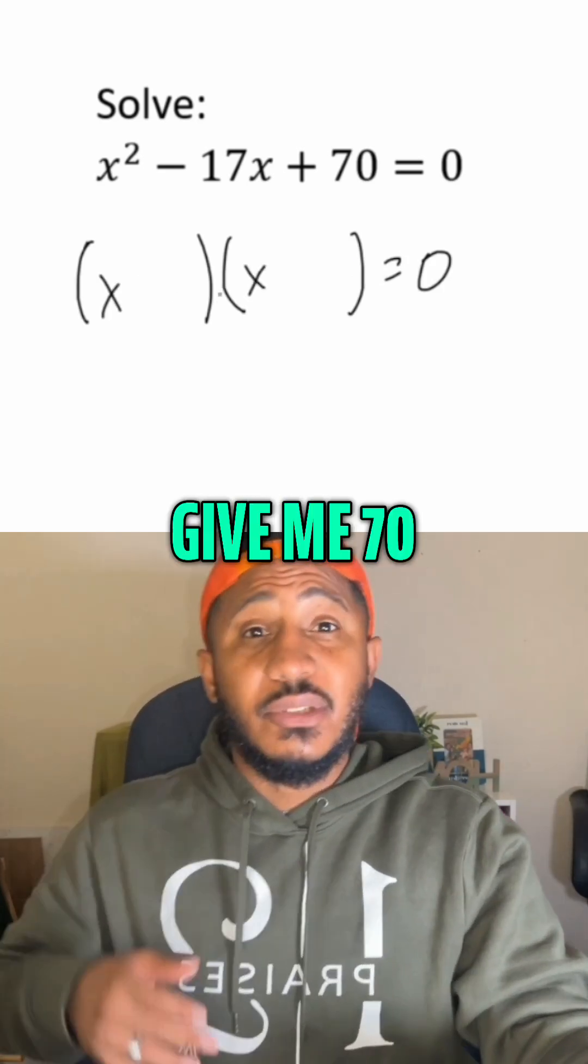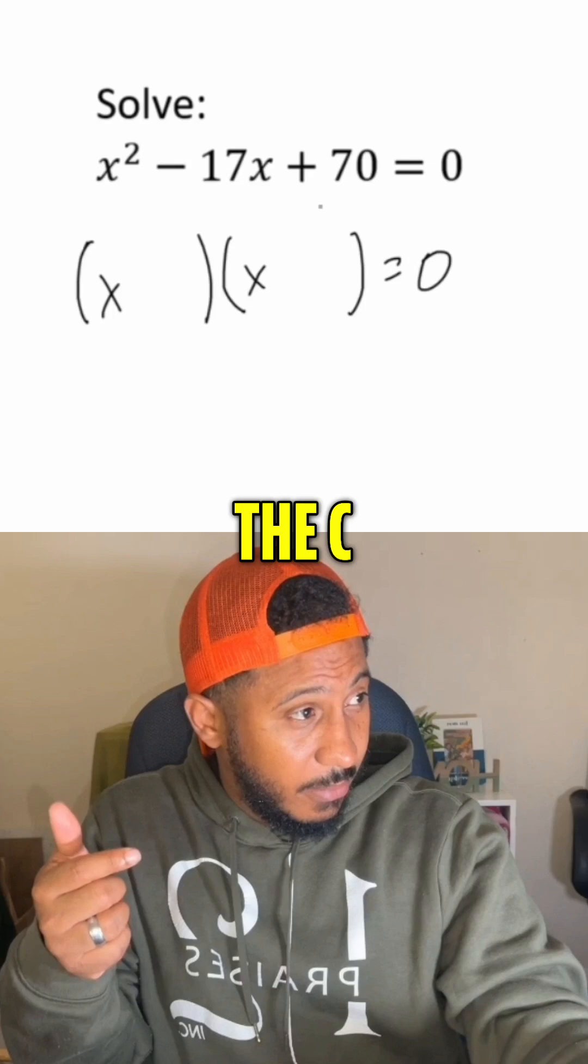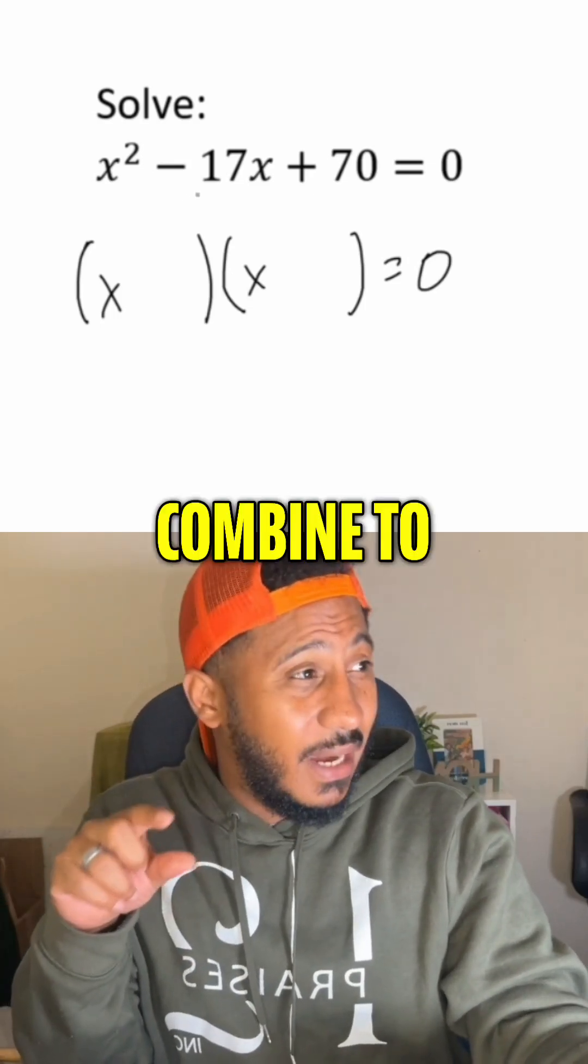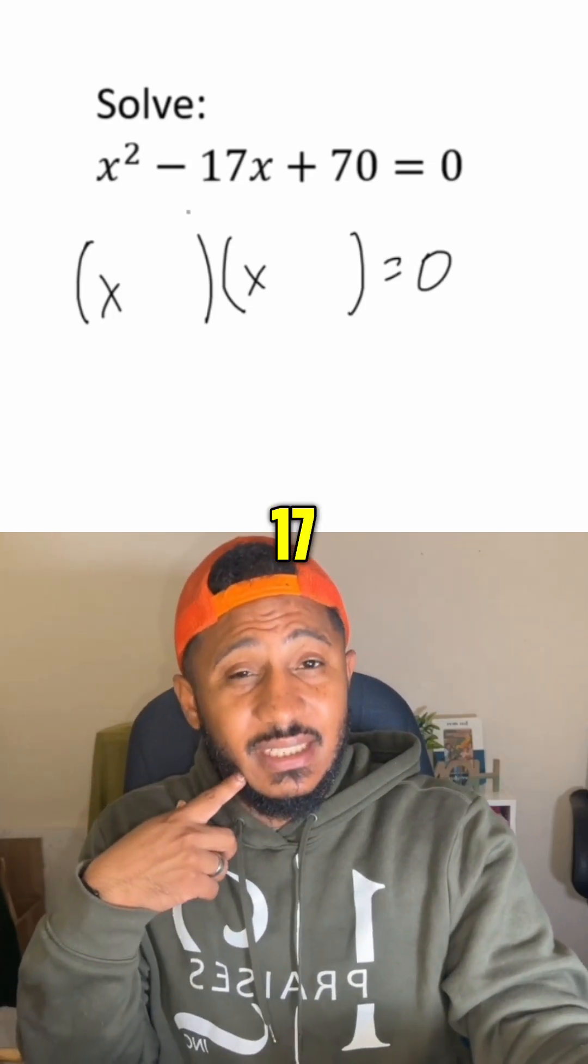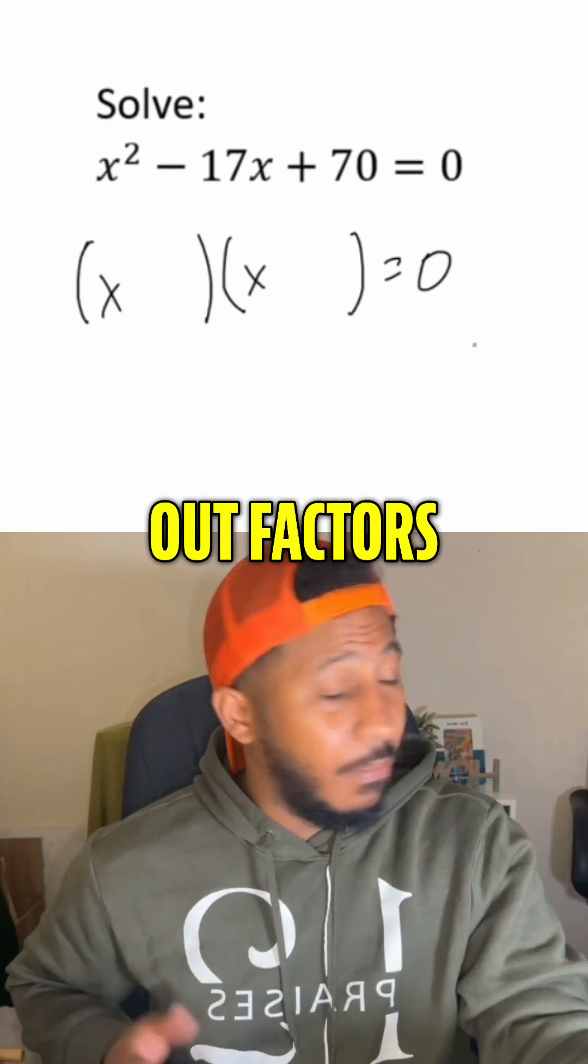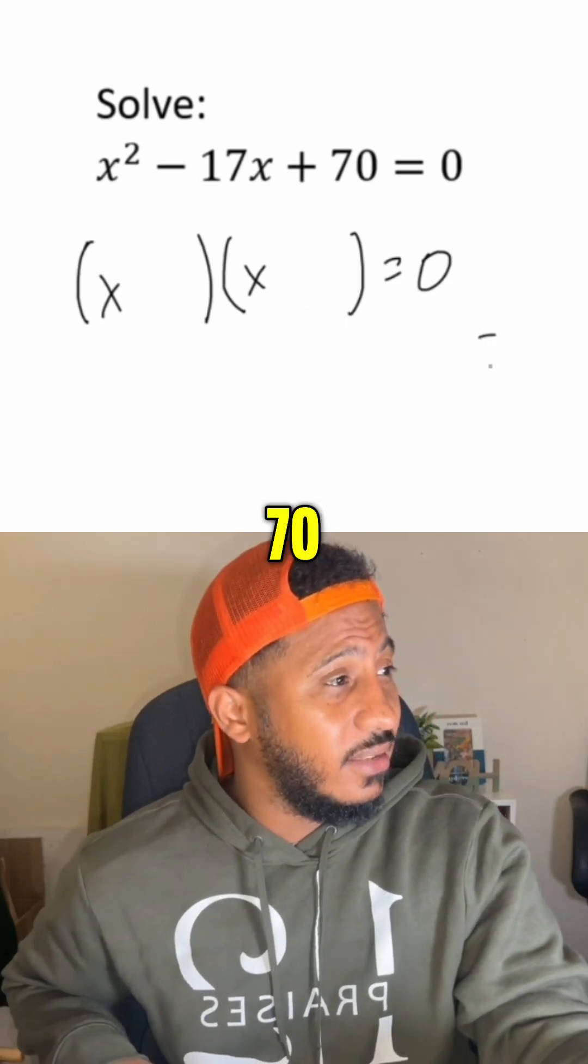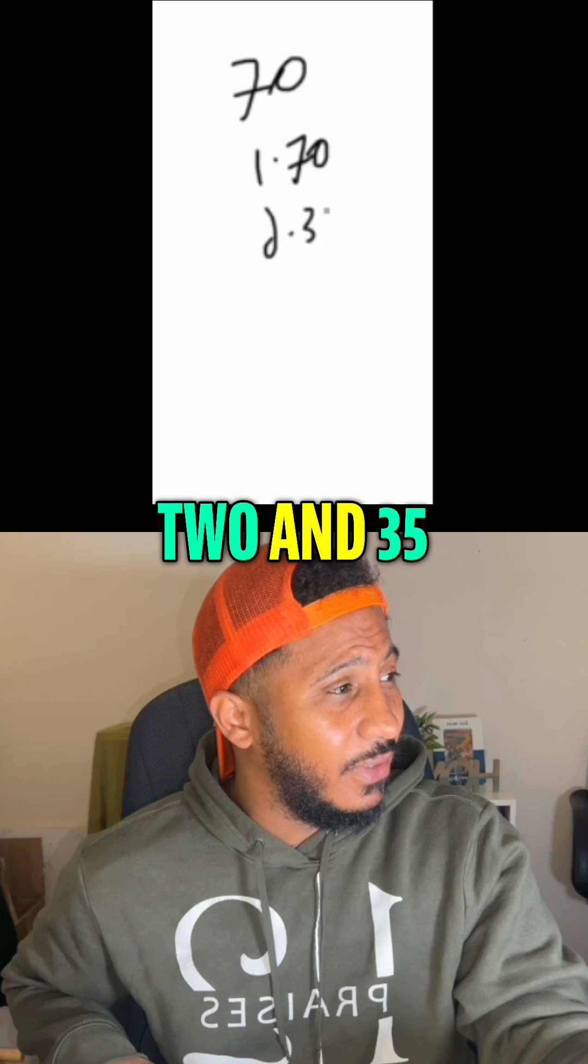Then the numbers that multiply to give me 70. Multiply to give me c, and then combine to give me this b, combine to give me this negative 17. So if I list out factors of 70, we get 70, we would say one and 70,